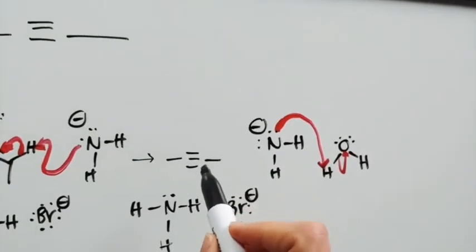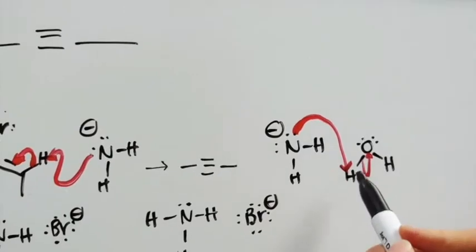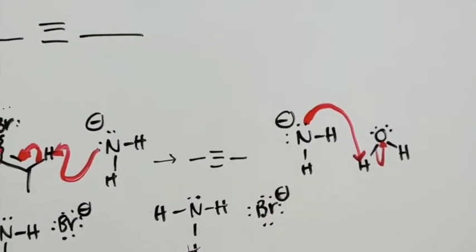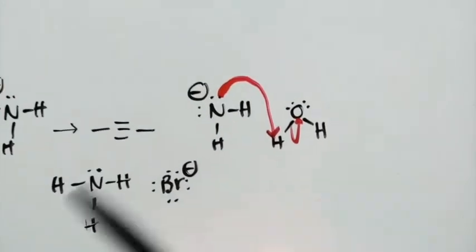That only happens with terminal alkyne. So if we have an internal alkyne, then we need to actually use water and protonate it that way. And so the next step is going to look like this.